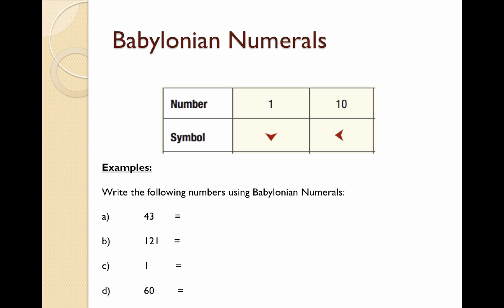Let's look at some examples. Question A: we're going to write these numbers using the Babylonian number system, so only using down arrows and left arrows. 43 has four tens, so we need four left arrows, and three ones are three down arrows — it's as simple as that to start off with.